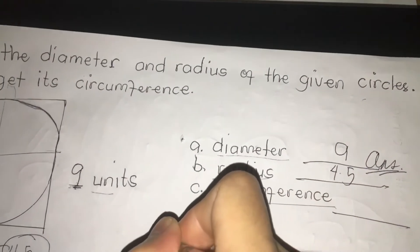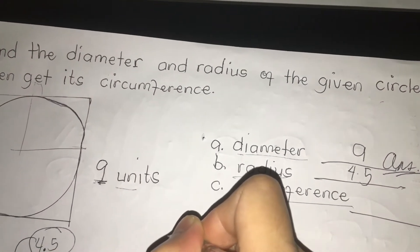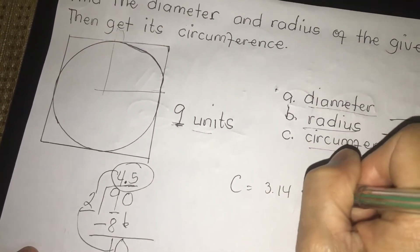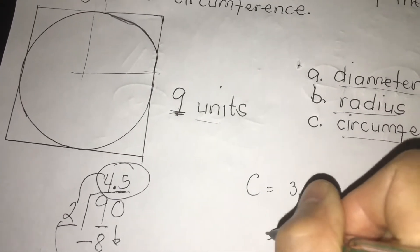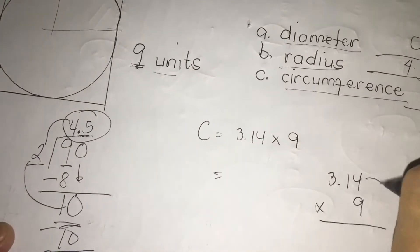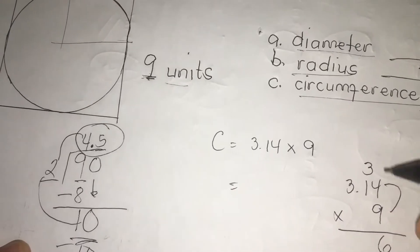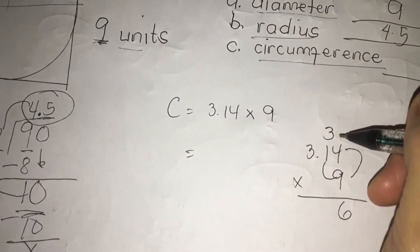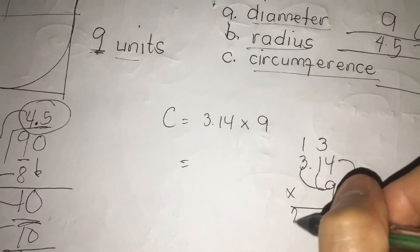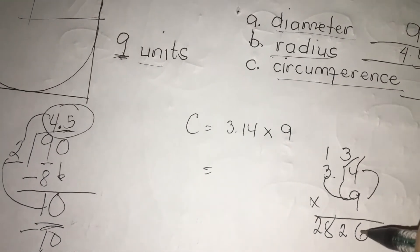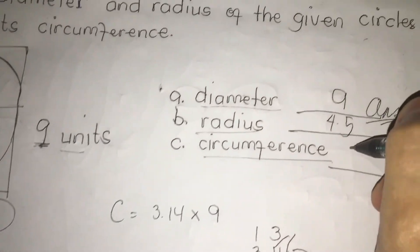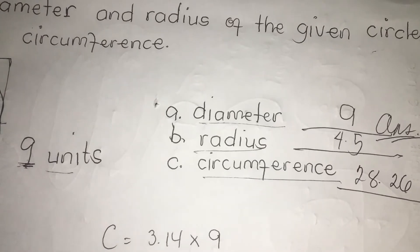Next, circumference. We're going to define circumference. Circumference is equal to 3.14 times 9. We're going to solve 3.14 times 9. 9 times 4, 36. We have 3. 1 times 9, 9, plus 3, 12. Regroup 1. 9 times 3, 27, plus 1, 28. Let's just count 1, 2, 1, 2. We have the decimal point. So our answer now is 28.26.